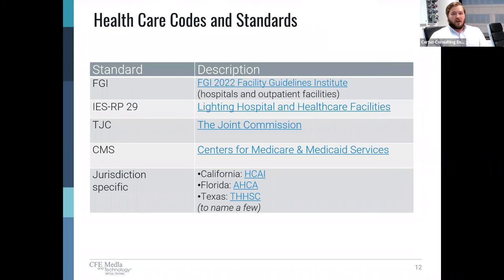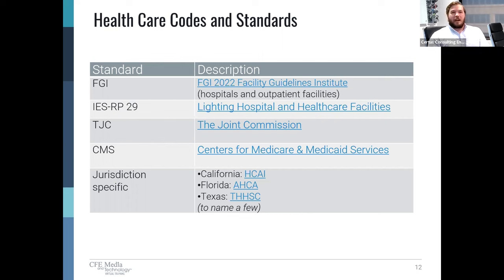Contrary to the codes, which are adopted requirements, these are the standards which may or may not apply depending on jurisdiction. FGI establishes consensus-based guidelines and publications advised by research to advance quality healthcare, and sets standards for things like receptacle quantities. IES RP-29 provides context, defines challenges, and identifies recommended lighting design practices for healthcare-specific environments — it is not prescriptive but provides guidance. TJC and CMS, while not construction codes, are the standards that the facility must comply with after the building opens. Depending on where you are, there may also be local jurisdiction-specific requirements such as California, Florida, and Texas.